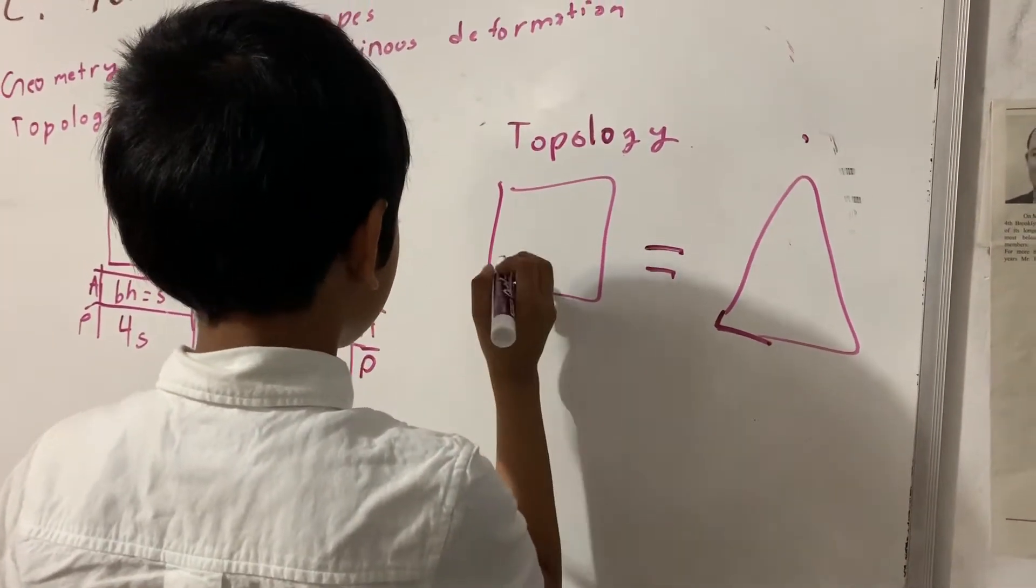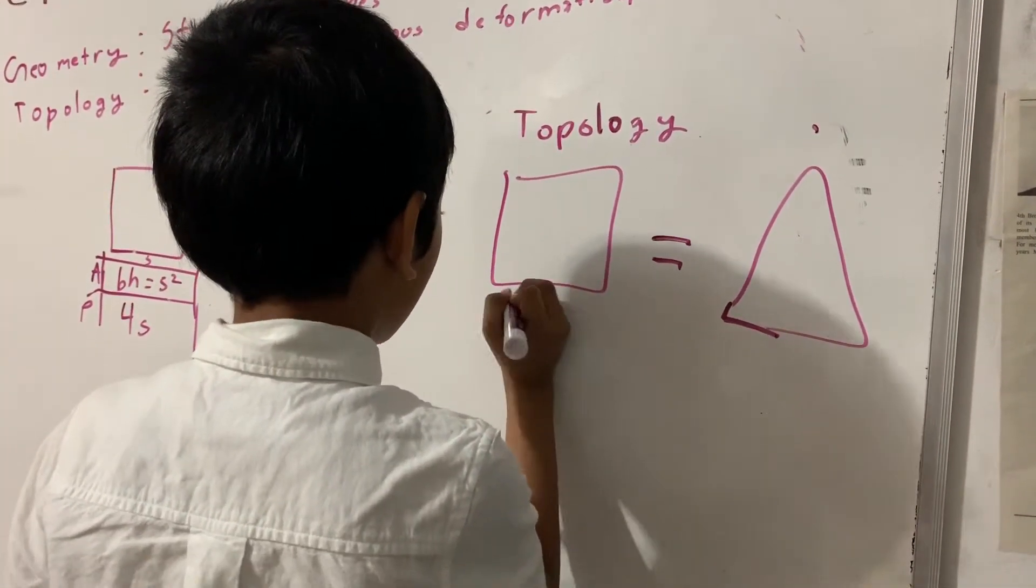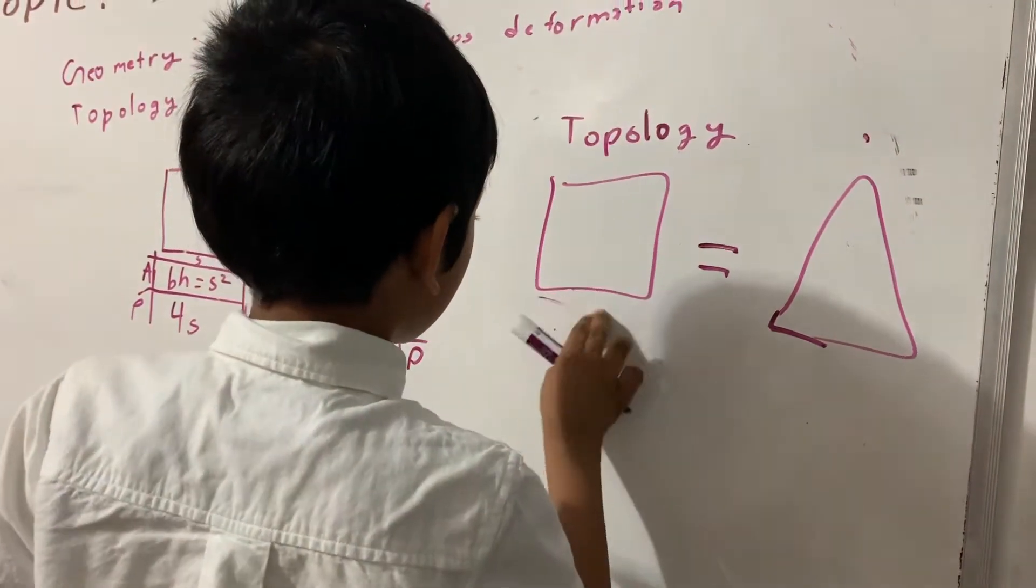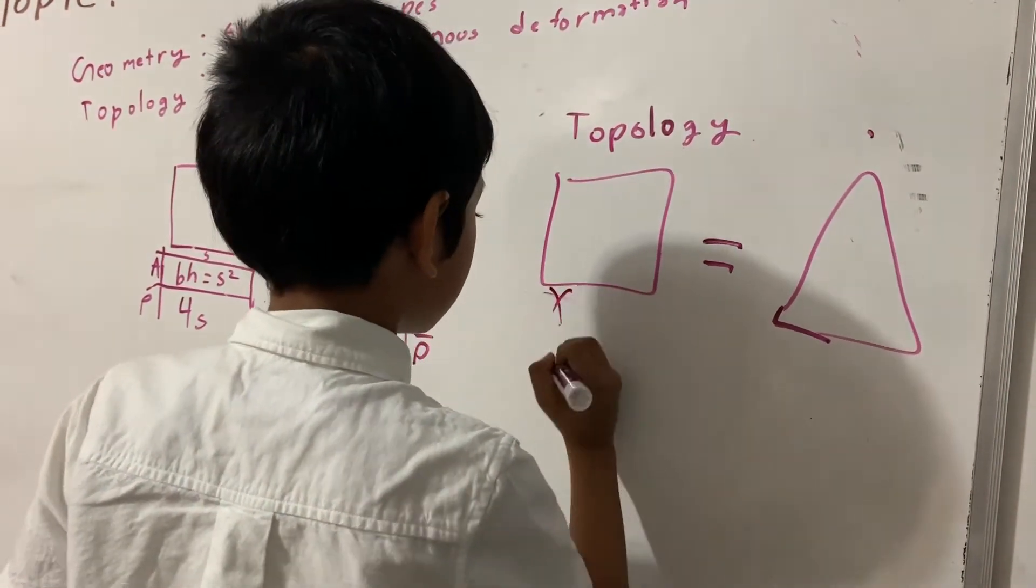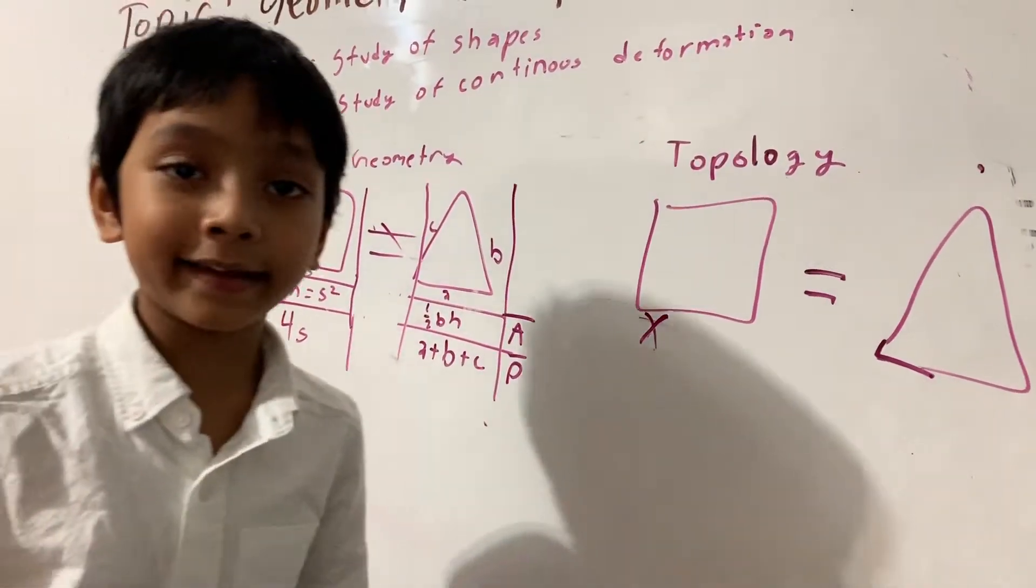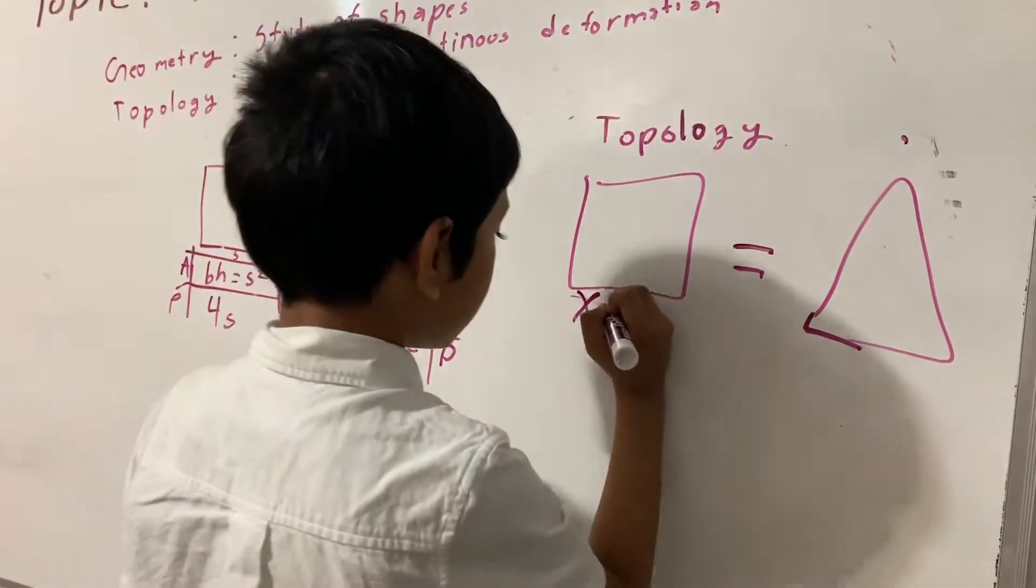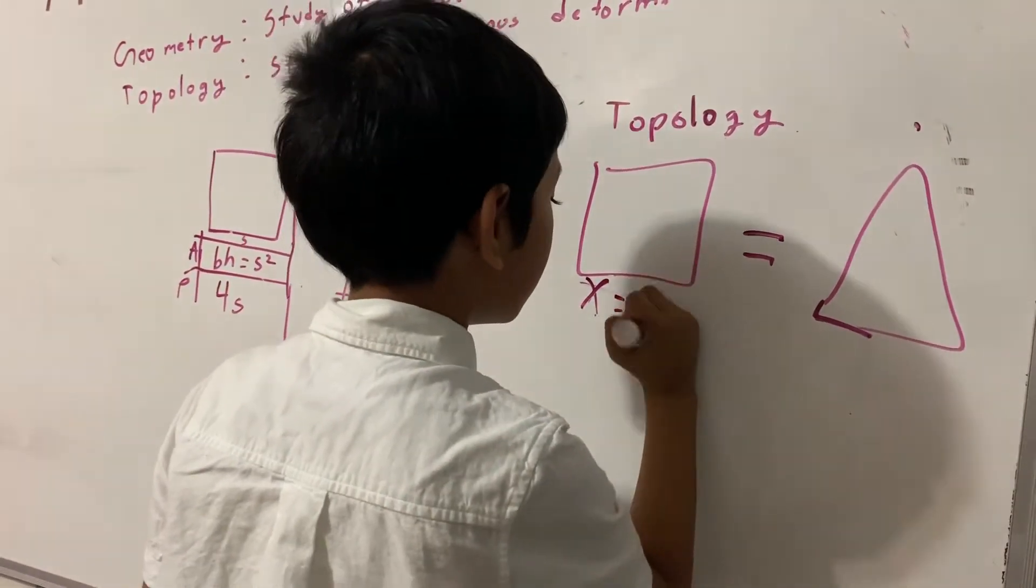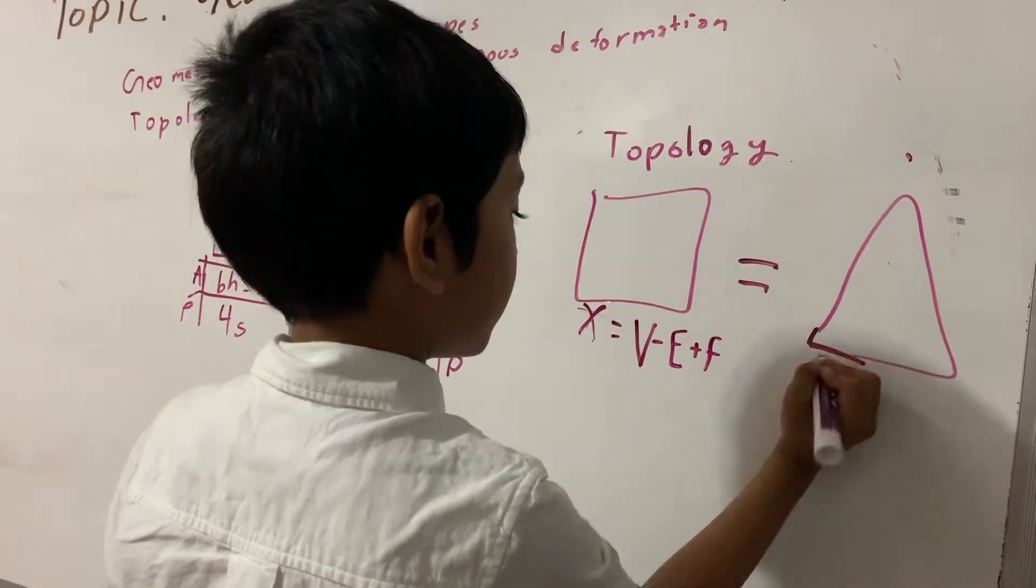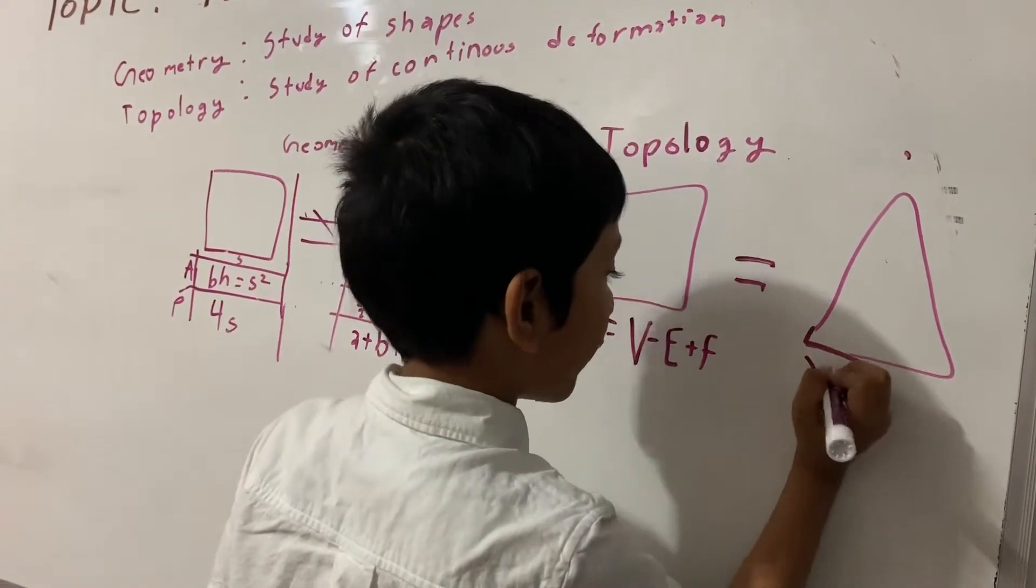So Euler characteristics are often represented by something called chi. Do not pronounce it like chi, pronounce it like chi. So chi is equal to V minus E plus F, and we're going to find that for both of them.